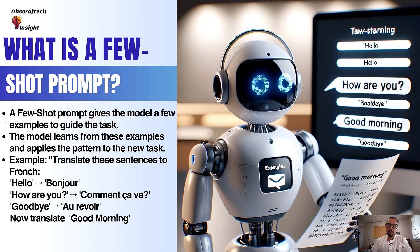Let's get started with our first prompt framework: few-shot prompts. Few-shot prompt means giving the AI a few examples before asking it to do a task. It's like teaching someone how to do something a few times, then asking them to do it on their own. With a few-shot prompt, the AI gets a bit of training before it has to work. The more examples you give, the better the AI can learn and the better the response you can get out of it.